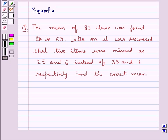Hello and welcome to the session. In this session we discuss the following question: the mean of 80 items was found to be 60. Later it was discovered that two items were misread as 25 and 6 instead of 35 and 16 respectively. Find the correct mean.